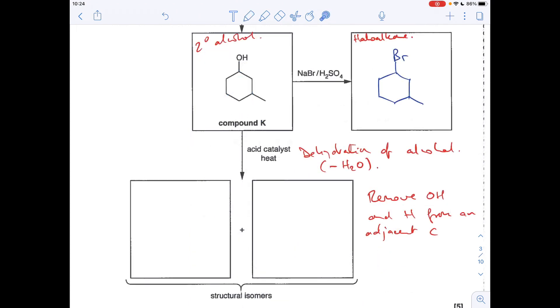So last part of the question, we're taking this secondary alcohol and we're reacting with an acid catalyst and heat. So that's a dehydration of an alcohol reaction. So in other words, we're going to remove water and we're going to create isomers, which are alkenes.